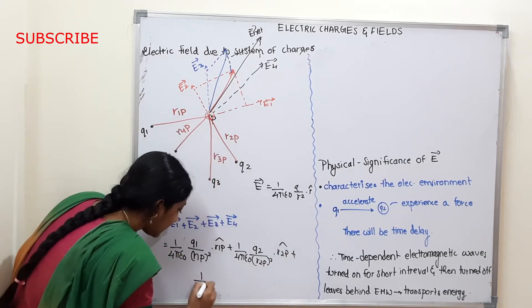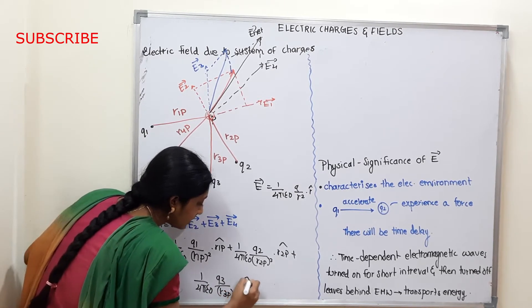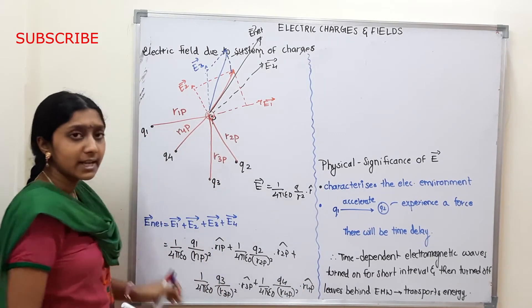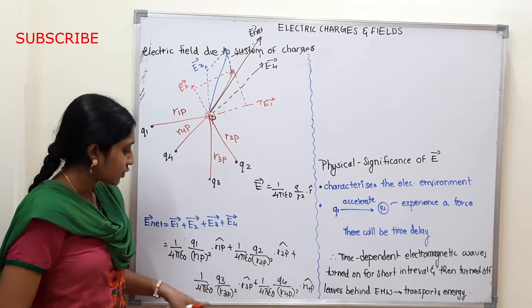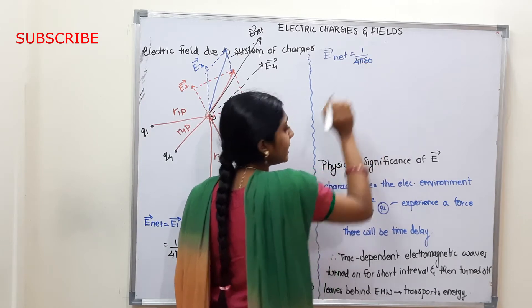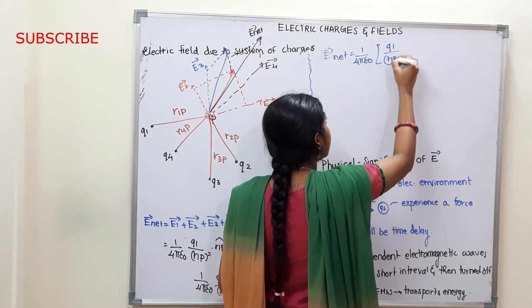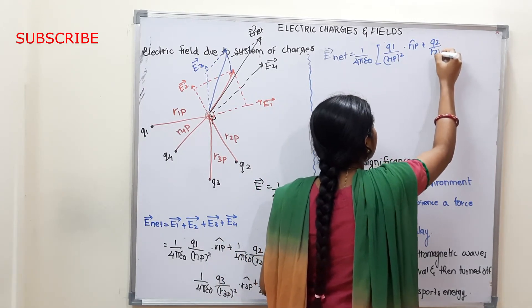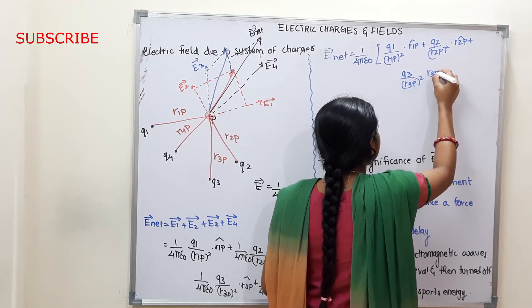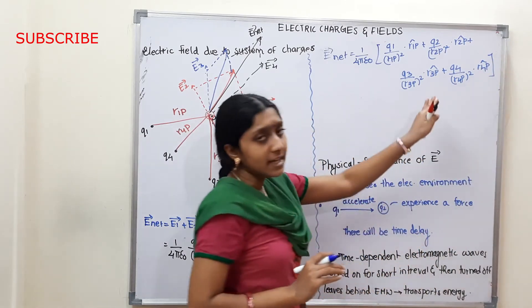Similarly, E3 = (1/4πε₀) · (Q3/R3P²) · R3P̂, and E4 = (1/4πε₀) · (Q4/R4P²) · R4P̂. Adding all terms, the common factor is (1/4πε₀). So, E-Net = (1/4πε₀) · [(Q1/R1P²)·R1P̂ + (Q2/R2P²)·R2P̂ + (Q3/R3P²)·R3P̂ + (Q4/R4P²)·R4P̂]. This is the E-Net formula for a system of 4 charges.